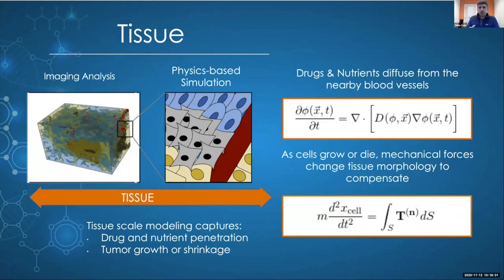At the tissue scale, the mesoscopic scale, is where a lot of the biophysics happens. We account for advection, diffusion, and reactions of different chemical species within the tumor microenvironment, as well as the biomechanics of tissues as different regions grow or die in response to their local chemical environment.